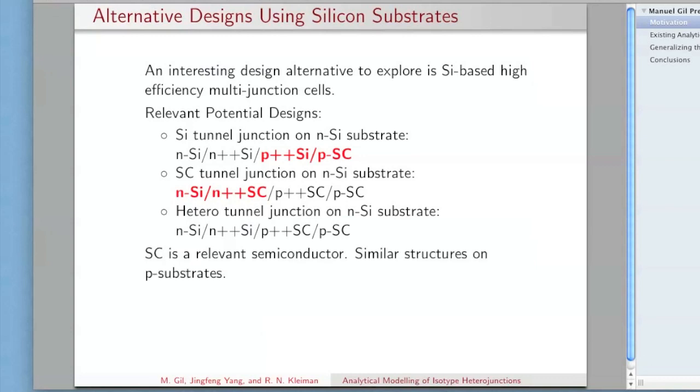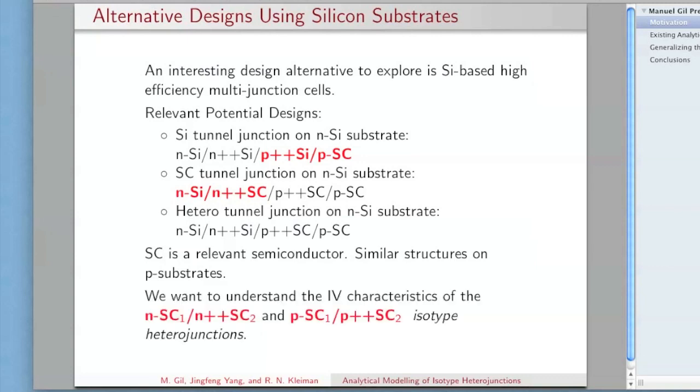Those first three I showed there were under the assumption you deal with an N substrate, but you could have similar structures on the P substrates. The main point of this work is that we want to understand the IV characteristics of the bolded terms, which are the isotype heterojunctions. Isotype here essentially just means that you're going to have the same type of doping on either side of the junction, as opposed to, for example, a P-N junction when you have a P and an N.